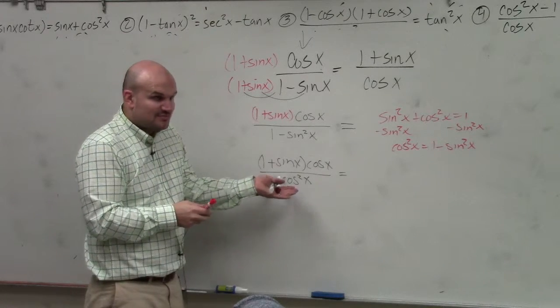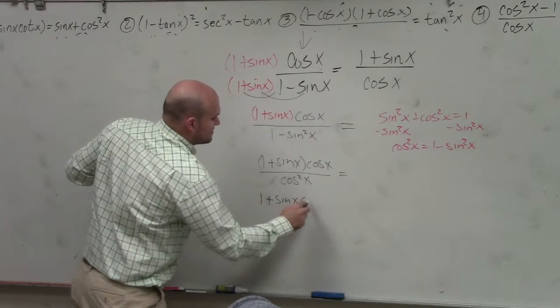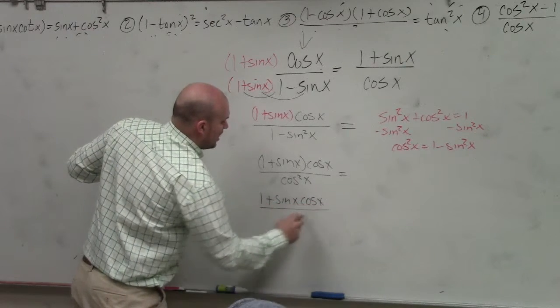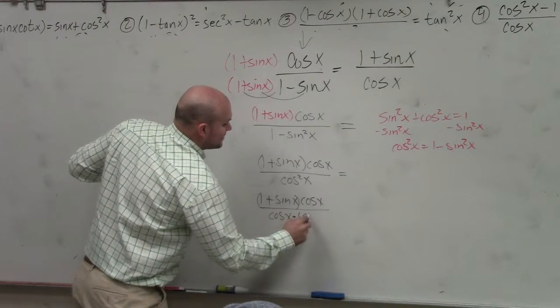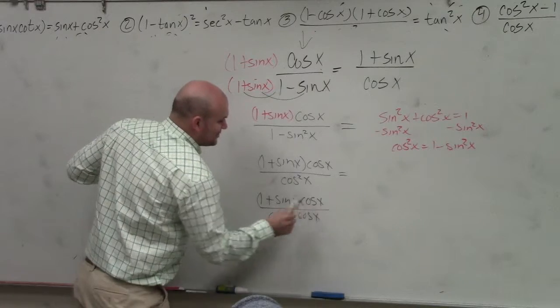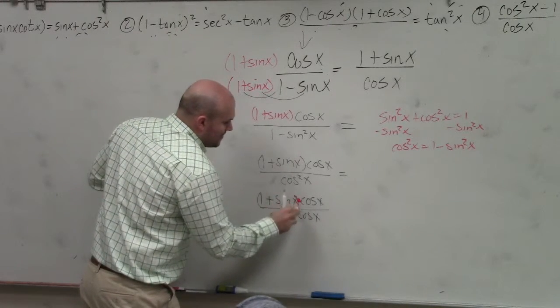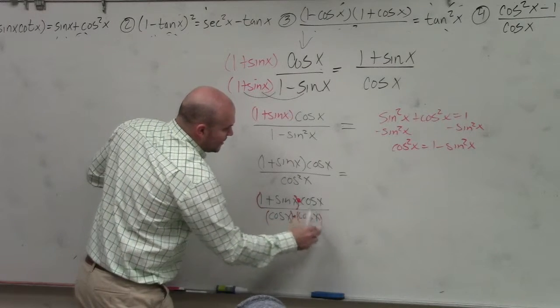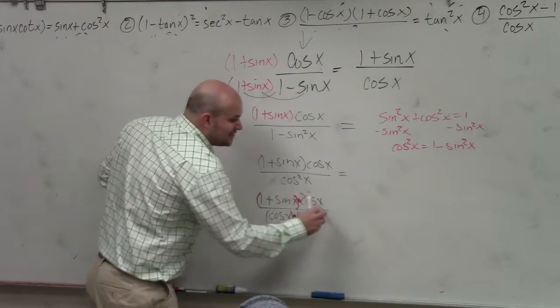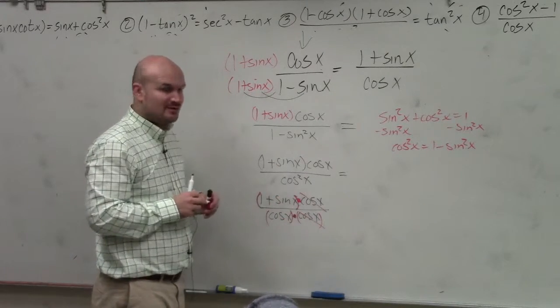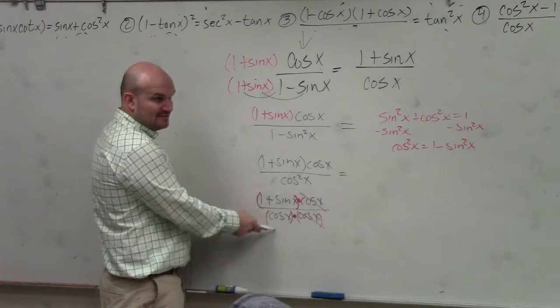What does cosine squared of x really represent? That really represents 1 plus sine of x times cosine of x over cosine of x times cosine of x. Do you see how these terms are now separated by multiplication? Now, since they're separated by multiplication, you can do exactly what you just said. I can divide them out.